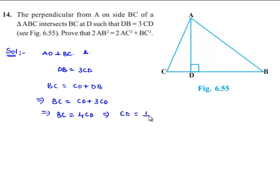That is nothing but CD is equal to one-fourth times BC. Let it be equation number 1. And as CD is equal to one-fourth times BC, we get DB is equal to three-fourths times BC, which is equation number 2.